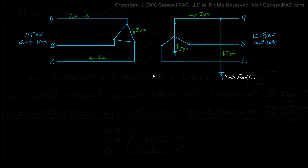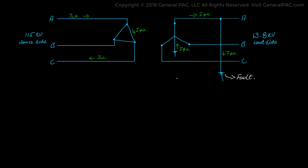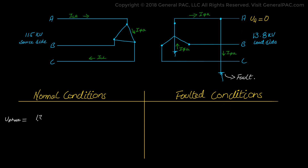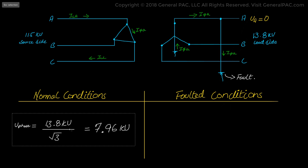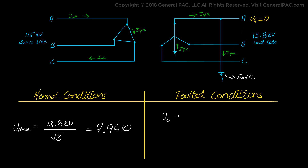This is an interesting and very logical result. Since the fault was a single line to ground fault on phase A, it is entirely expected that phase A voltage drives to zero at the point of the fault. Phase B and phase C voltage magnitudes show a slight depression: under normal balanced conditions, phase voltages should be 13.8 kV divided by root 3, which equals 7.96 kV. However, during the phase A to ground fault, phase B and C voltages are 7.52 kV — a slight depression on the unfaulted phases.